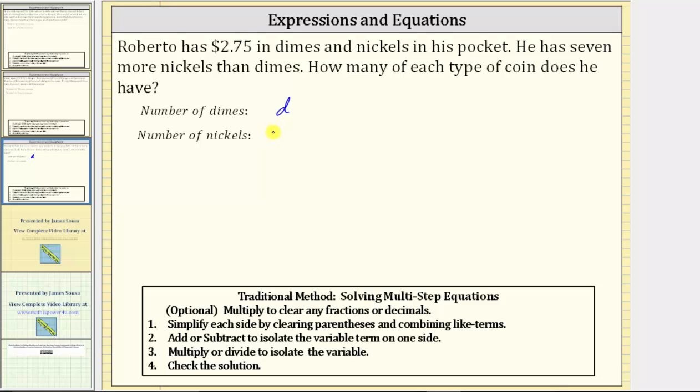Therefore, because he has seven more nickels than he has dimes, we can use the expression d plus seven for the number of nickels.